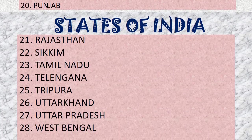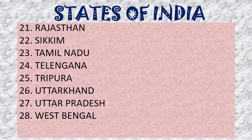From the 21st state: Rajasthan, Sikkim, Tamil Nadu, Telangana, Tripura, Uttarakhand, Uttar Pradesh, and West Bengal. Once again from the 21st: Rajasthan, Sikkim, Tamil Nadu, Telangana, Tripura, Uttarakhand, Uttar Pradesh, and West Bengal. These are the 28 states of India.